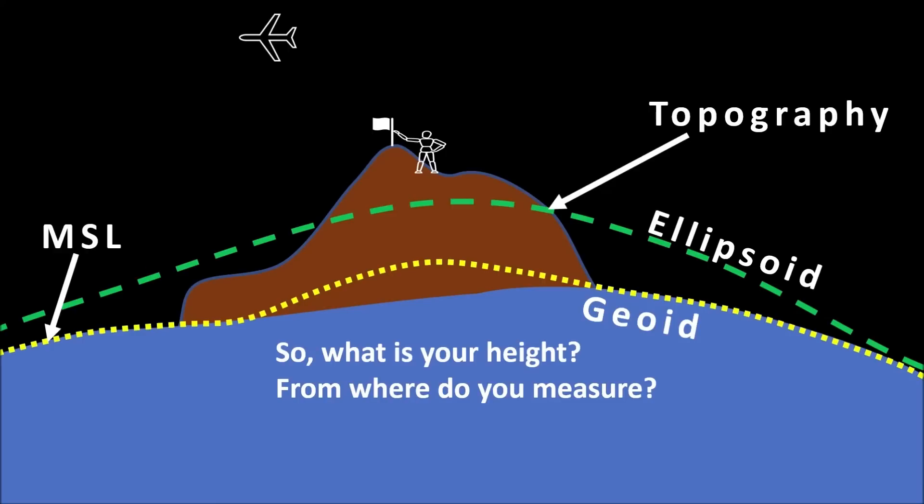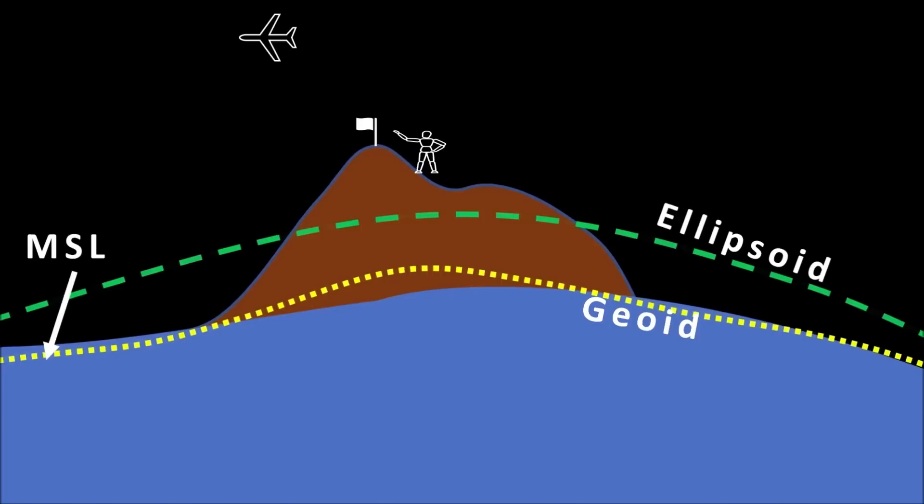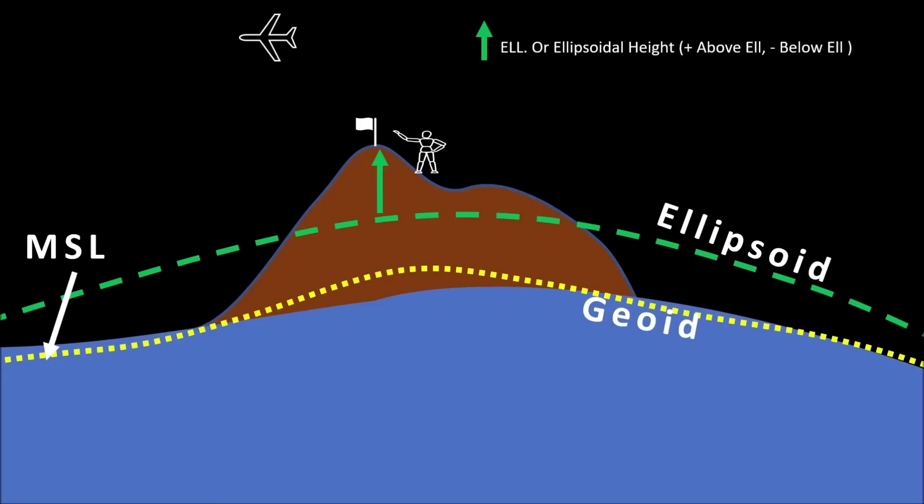So let's zoom in a bit, shall we? This green arrow represents the ellipsoidal height, which is above the ellipsoid and can be below the ellipsoid also. This yellow arrow represents the orthometric height or the height above the local geoid, and it also can be taken as height above mean sea level.